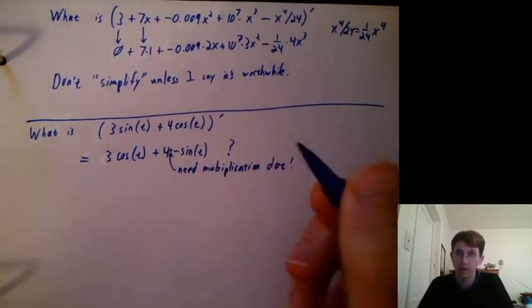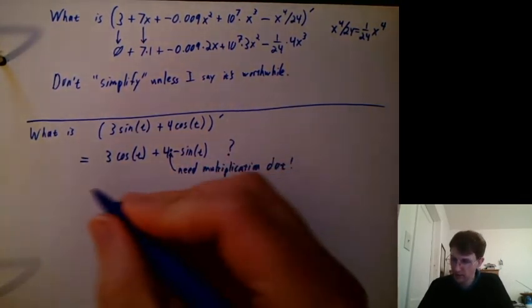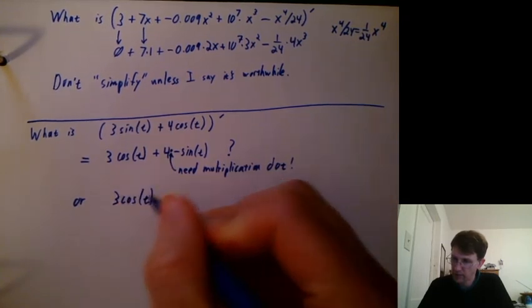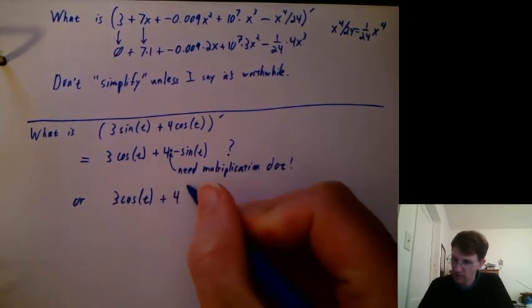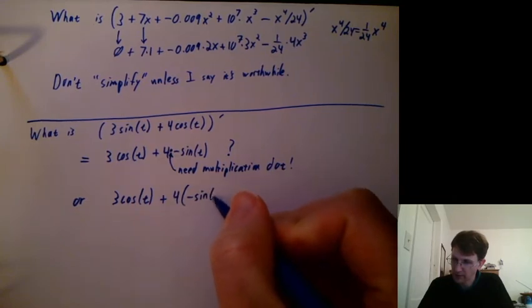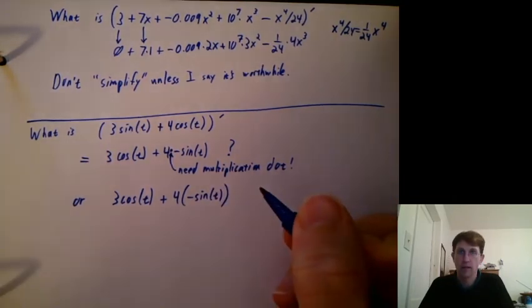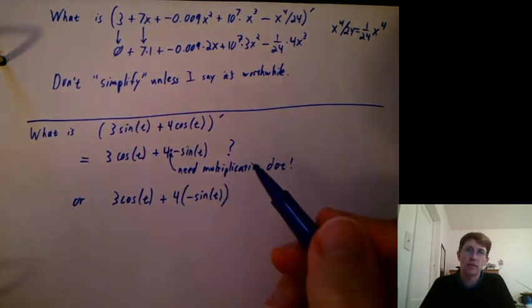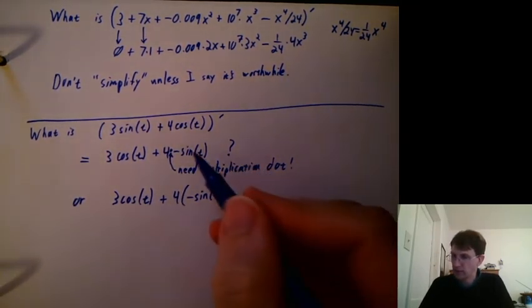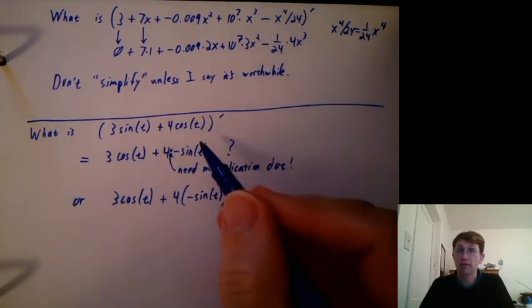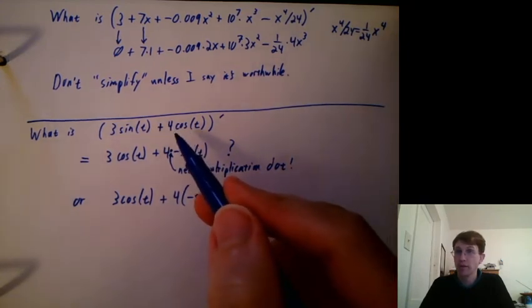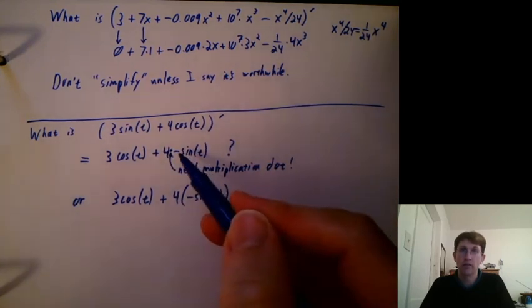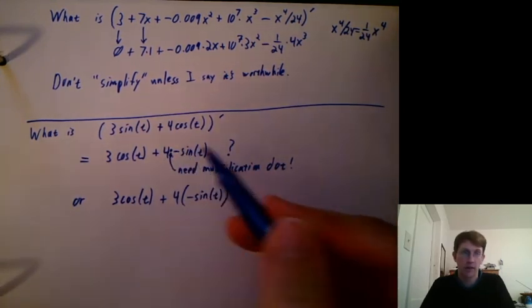So I can put a dot right there and then that will be the right answer. Or you could do the same thing with parentheses. You could say 3 cosine t plus 4 parenthesis negative sine t. And I see people making that mistake on quizzes and exams and stuff. So please be very careful about that because it's quite common that we have a multiplier times cosine and we take the derivative and we really need to make sure we keep doing a multiplication, not a subtraction there.